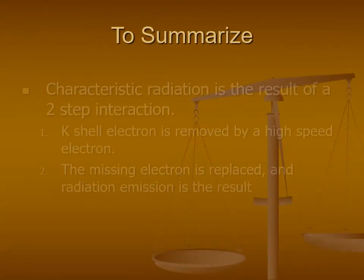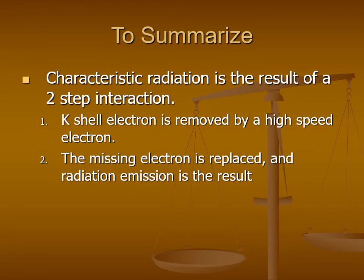To summarize, the K-shell electron is removed from its orbital, and an electron from a higher orbital takes its place. Since the replacement electron has more energy than an electron needs to exist in the new orbital, it releases energy in the form of an X-ray.